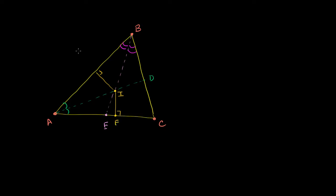Let's label these points: this could be point F, and this could be point G. Because I sits on AD, the angle bisector, we know that IF is going to be equal to IG. Now I also sits on BE, which says that its distance to AB must be the same as its distance to BC. I's distance to AB is IG. We also know that distance must equal the distance between I and BC. Dropping another perpendicular and calling that point H, we get that IG must be equal to IH.